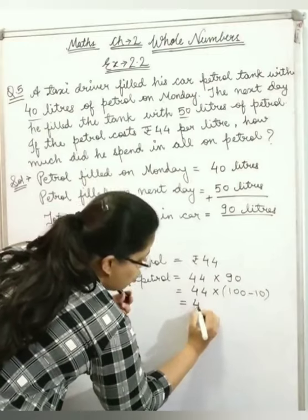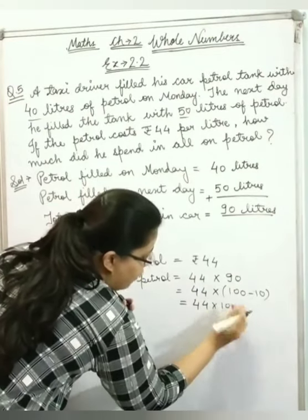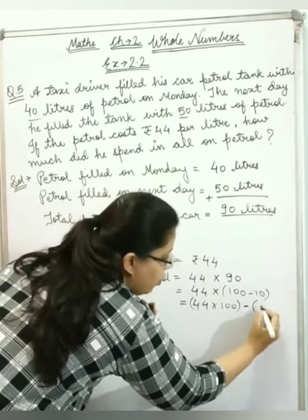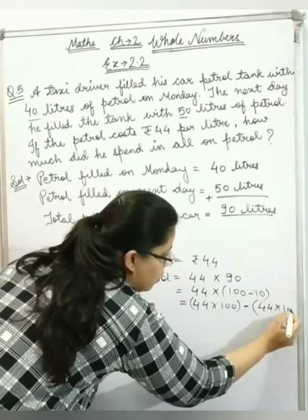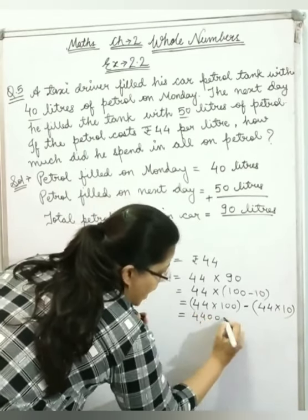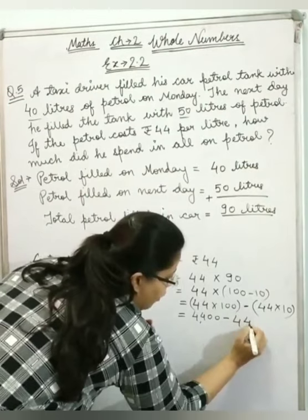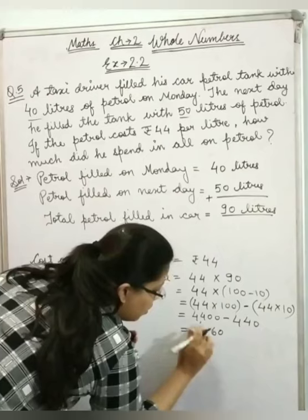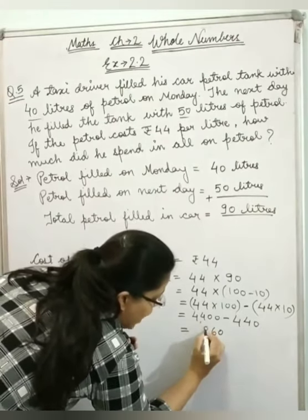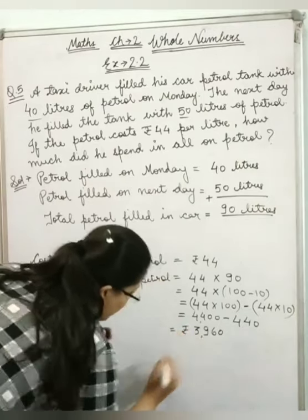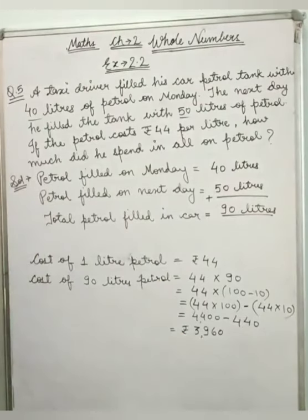Now, distributive property gives us 44 into 100 equals 4,400 minus 44 into 10 equals 440. So we get 4,400 minus 440 equals 3,960. So, 90 litres cost is 3,960.